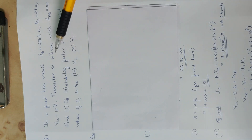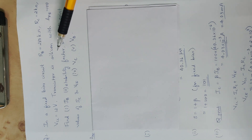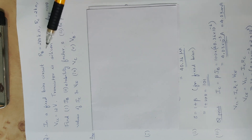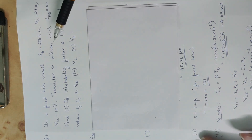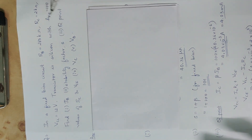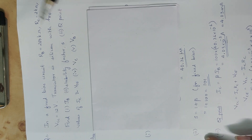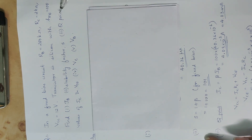For silicon, VBE is the base-emitter voltage, also called the cut-in voltage, which equals 0.7 volt. With HFE equal to 100, we need to find IB, the stability factor, and Q-point values of IC and VCE, VC, and VB.